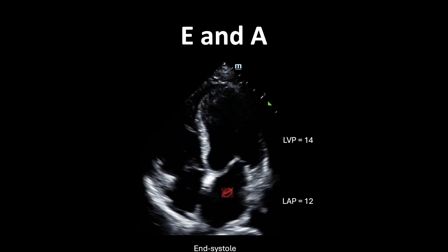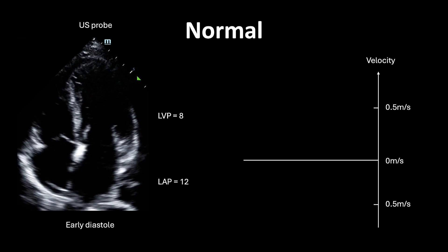Let's talk about the E and A waves. At the end of systole, the mitral valve is closed as left atrial pressure is lower than left ventricular pressure — imagine these as 12 and 14 respectively. Place your pulse wave Doppler gate in the LV, just distal to where the mitral valve leaflet tips meet. When LV pressure falls below LA pressure, the mitral valve opens. In early diastole, with LA pressure at 12 and LV pressure at 8, a pressure gradient drives blood from the higher to lower pressure chamber. Since blood moves toward the ultrasound probe at the LV apex, pulse wave Doppler records a positive deflection — this is the E-wave, for early diastole.